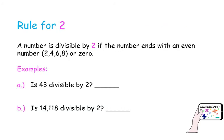Let's start with an easy one. How do we know if a number is divisible by 2? A number is divisible by 2 if the number ends with an even number — those are 2, 4, 6, and 8 — or if it ends with 0. This is an easy rule.